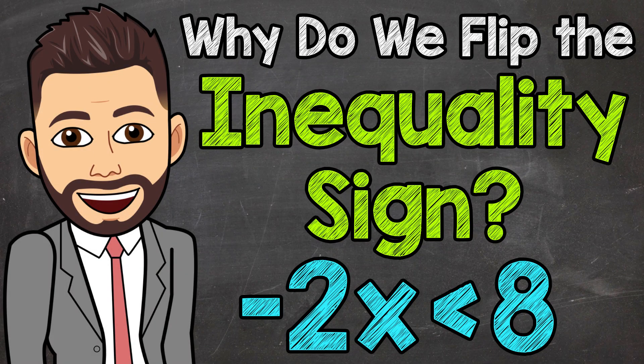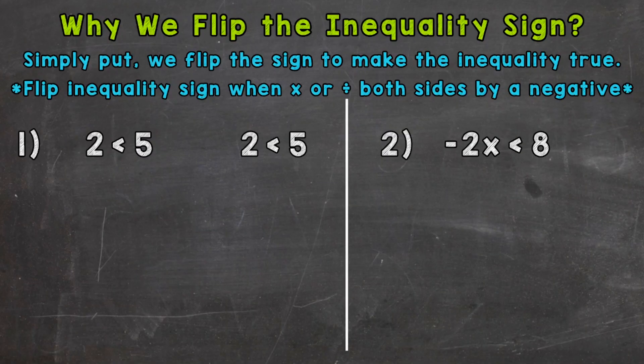Welcome to Math with Mr. J. In this video, I'm going to cover why we flip the inequality sign when we multiply or divide both sides by a negative. And simply put, we flip the sign to make the inequality true. So we're going to go through a few examples in order to better understand why we flip the inequality sign when we multiply or divide both sides by a negative.